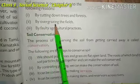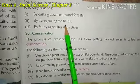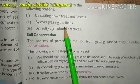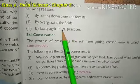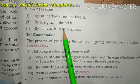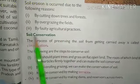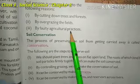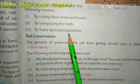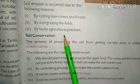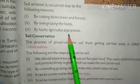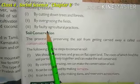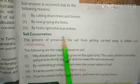Number two is by overgrazing the fields. When cattle are left to graze freely, they overgraze to such an extent that the upper layer of the soil gets disturbed. Number three is by faulty agricultural practices - sometimes when we use tractors and other heavy machinery incorrectly, it contributes to soil erosion.